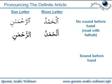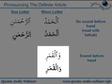Now we'll do the same thing, but this time we'll take an example where there is a sound before the word. Here we have the word 'qamar', but we've got the word 'wah' before it. So we've got the definite article, but before that is 'wah'. In this case, you do not read the hamzatul wassal.